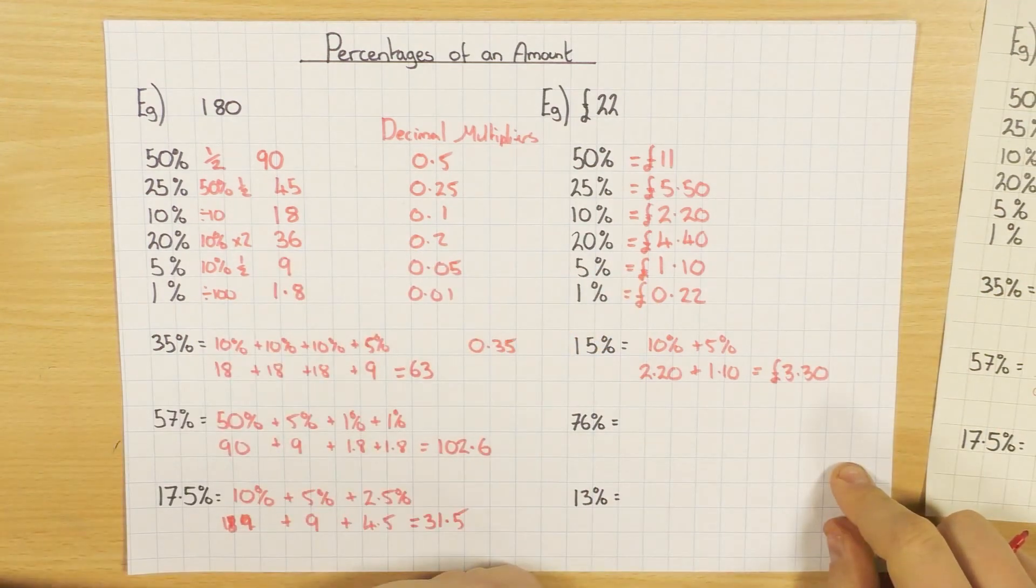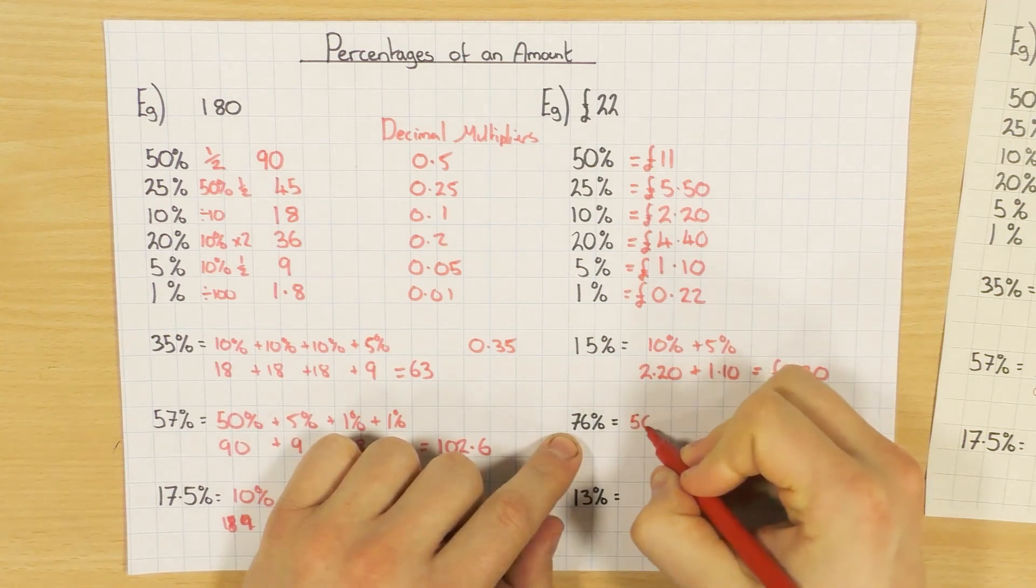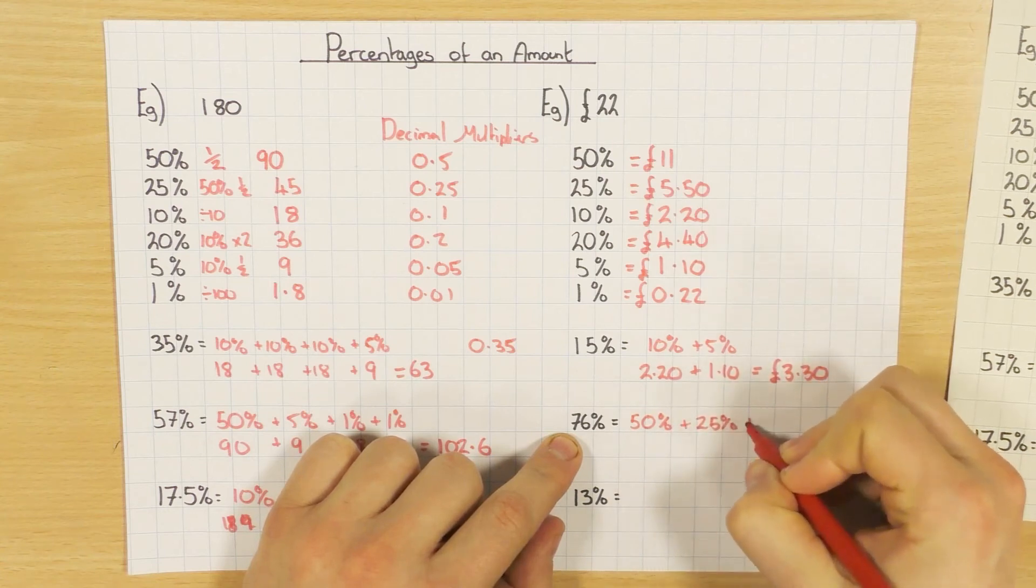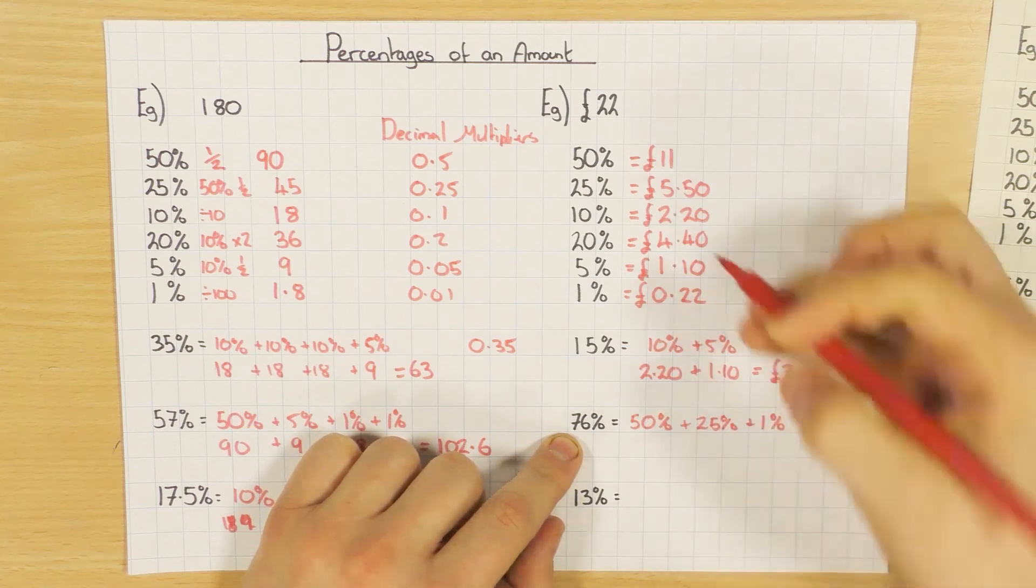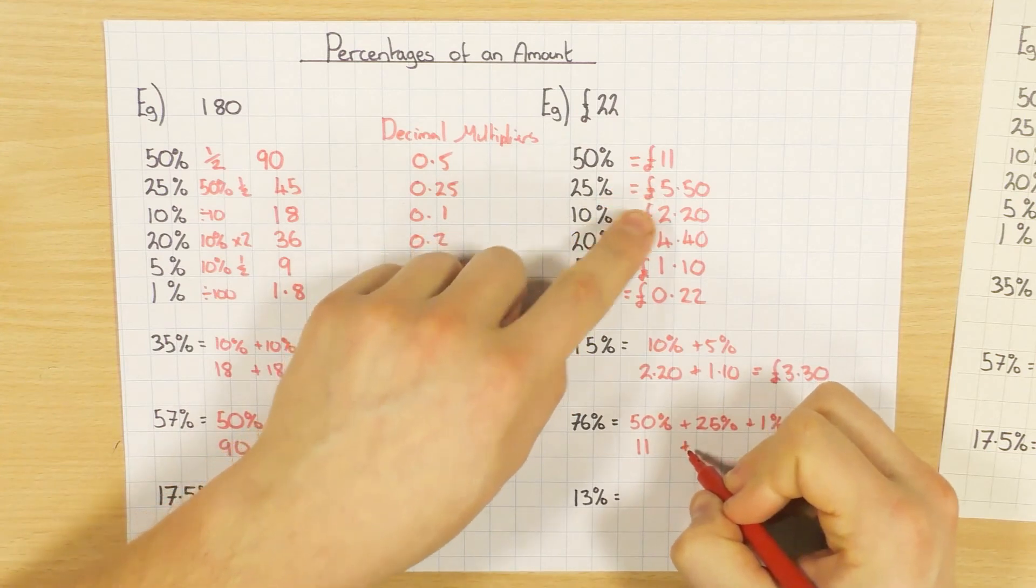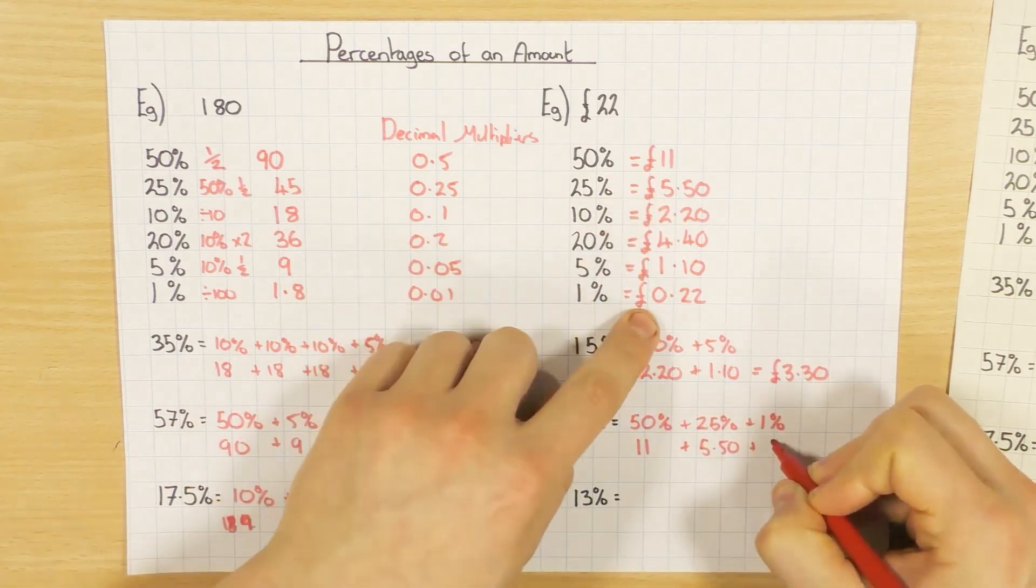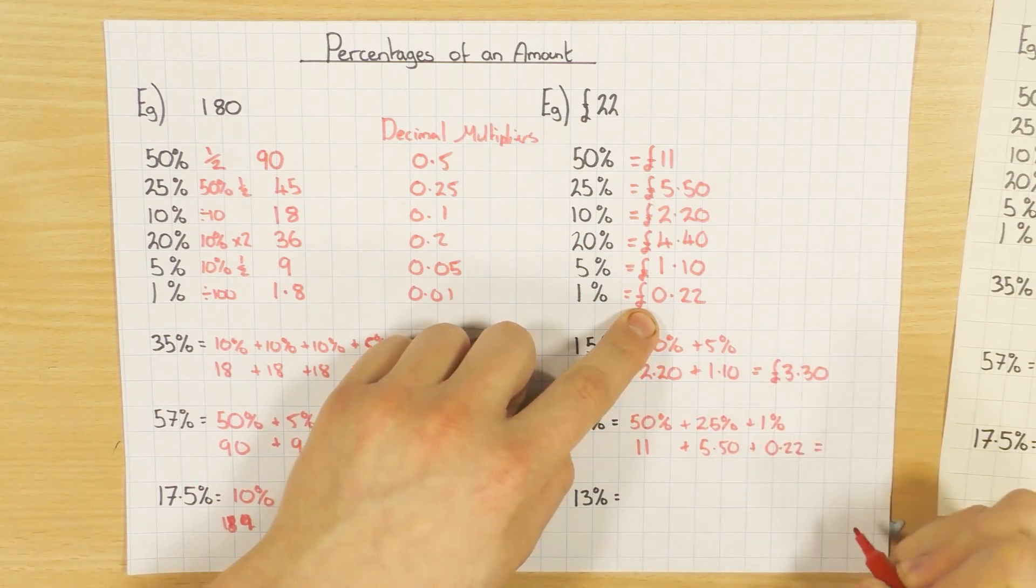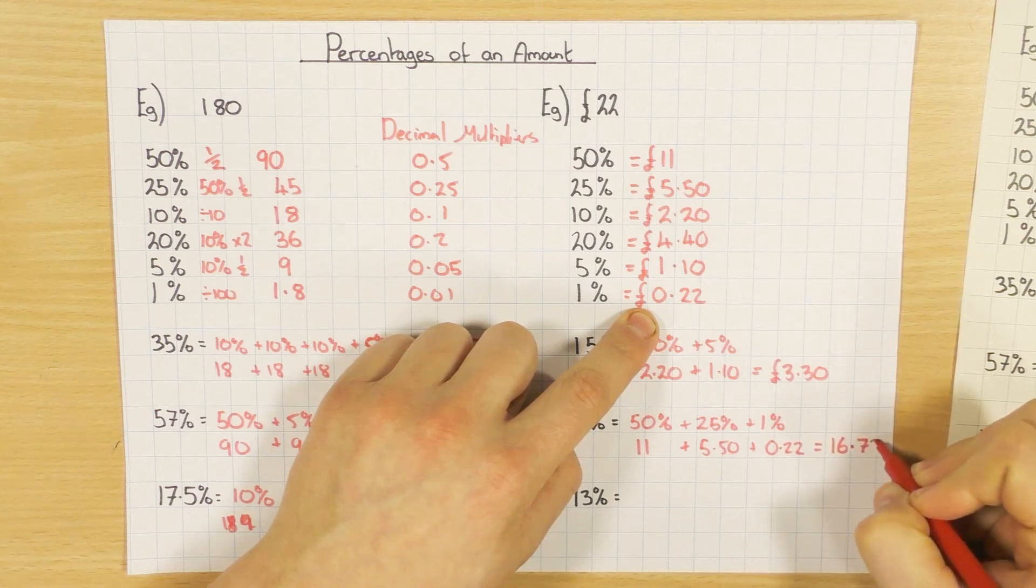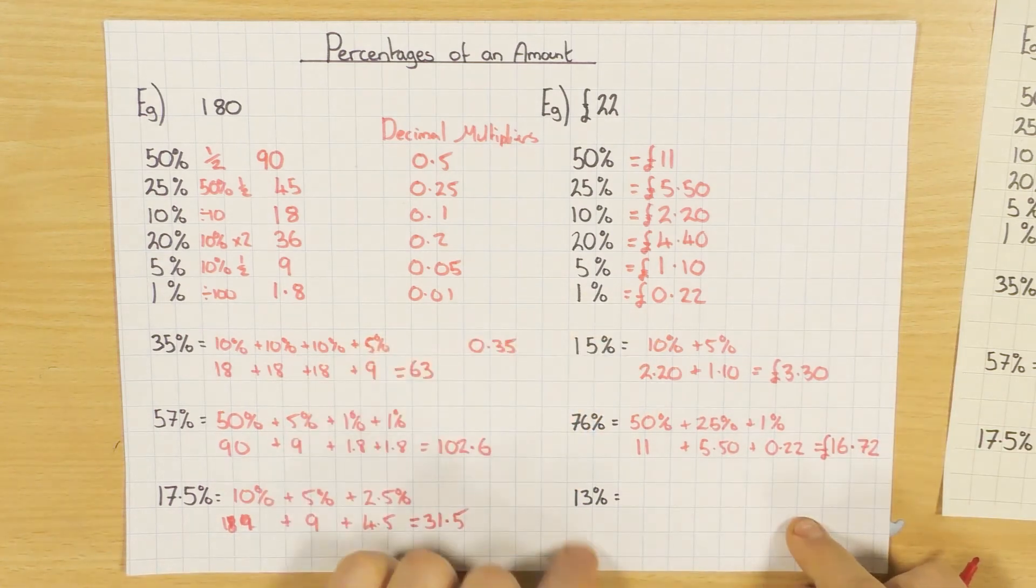Next one here, I've got 76%. So different ways you could break this one up. I'm going to go with a 50%, plus a 25%, and plus a 1%. So there are different ways—I'm saying any combination of these will get you the answer. So 50%, we had £11. 25%, we had £5.50. And 1%, we had 22p, or 0.22. So add those together, you'll have £16.72.